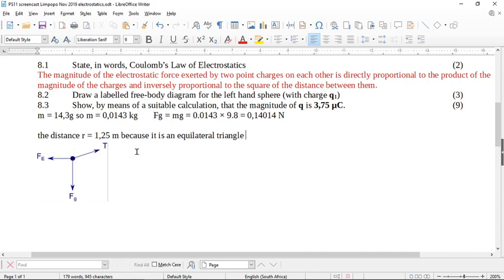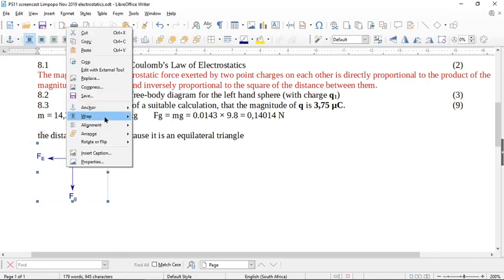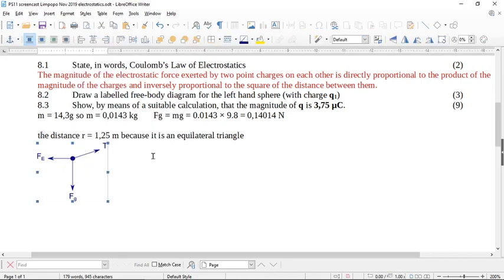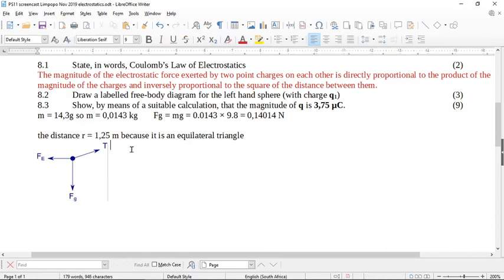So write that down. Let's write on the side of this object. Write down what you know. So say T sub X equals Fe, and T sub Y equals Fg, okay? Because the object's in equilibrium.